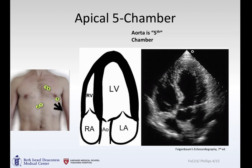Turning the probe from the axilla down towards the bed, you can open up the fifth chamber of the heart, which is the aorta. So here's the left ventricle, aorta, aortic valve, left atrium, right ventricle, and right atrium — and here is a cartoon of it.